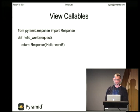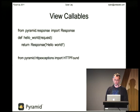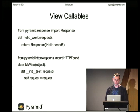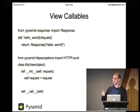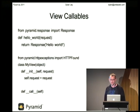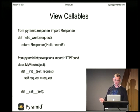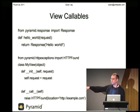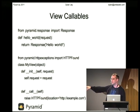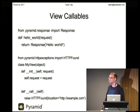So, view callables. The very simplest is a function that takes a request — pretty easy. We also have class-based callables. If this happens to be how your code is better structured — maybe you're doing overriding subclasses and so on — the very simplest is you have an __call__ method. The initialization will be set up with the request, and then the __call__ method is the bit that should return a response. In this case we're returning a response that does a redirection.